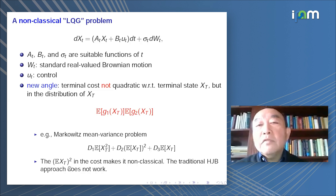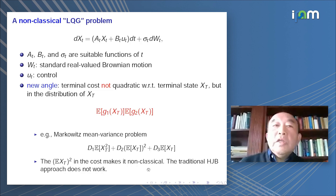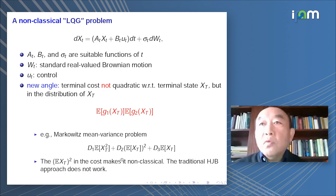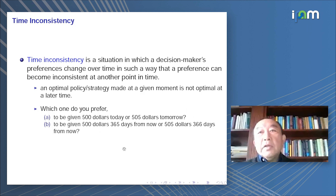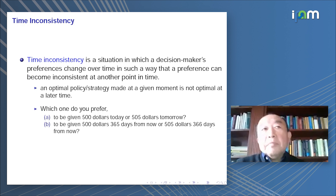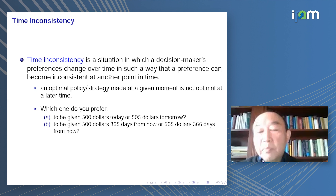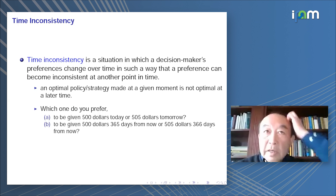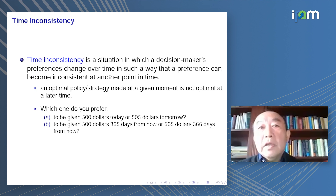What you have here is the expected value of X_T, the terminal state, and you take the expectation of that and square that quantity. This becomes non-classical — the traditional HJB approach does not work at all. This is a so-called time-inconsistent control problem: the decision maker's preference changes over time but is not consistent across time, so Bellman's principle no longer works.